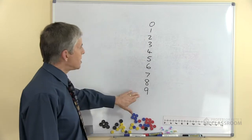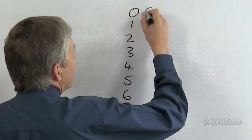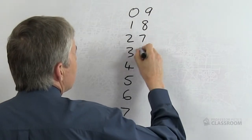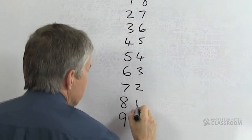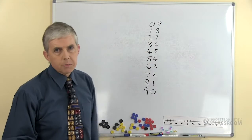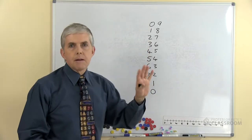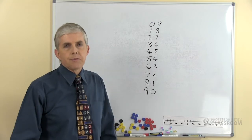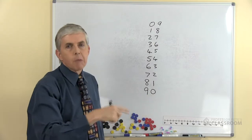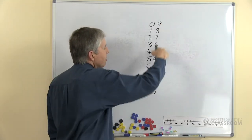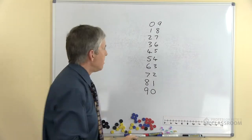Let's look at this sequence of single digit numbers from zero to nine. What happens if we write the single digits in the opposite order next to the first one? Notice we get the multiples of nine — so we've got nine, eighteen, twenty-seven and so on. We can see that the tens digit is going up by one each time, the ones digit is going down by one each time, and in combination we get the nine times table.